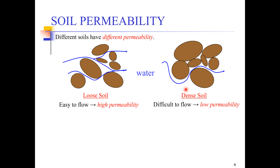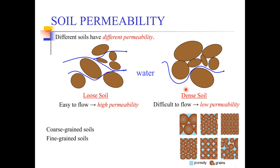Following the same reasoning, coarse-grained soils — because of having large void sizes like gravels or sands — are going to have high permeability. Fine-grained soils like clays, because of small particle sizes, will have smaller pore sizes and therefore very low permeability. Now the question comes: why is permeability important? What are the different structures in civil engineering where permeability or the flow of water through soil plays an important role?